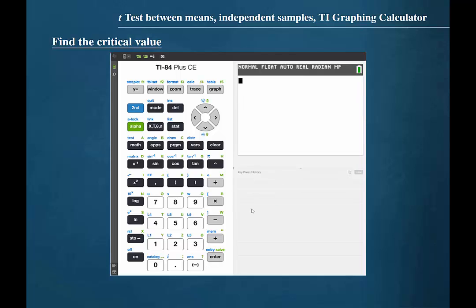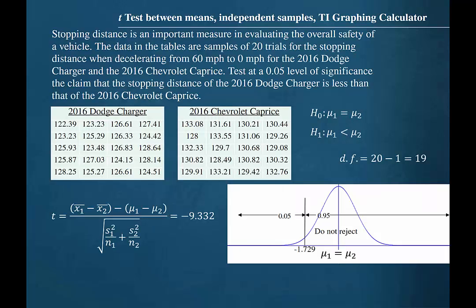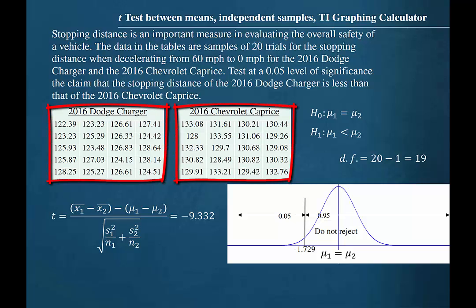We can also find the test value using the TI graphing calculator. To do this, we will need to know the hypotheses. The hypotheses are mu1 equal to mu2 and mu1 less than mu2. So we have a left-tailed test. In this example, we have all of the data values available to us.